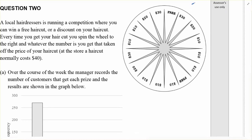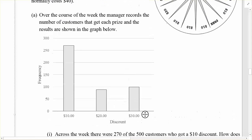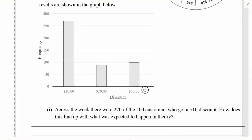We can see here on the wheel that there's a bunch of different prizes, everything from getting the haircut for free down to just a $10 prize. Here's the results from the week, and it says here part one: across the week there were 270 of the 500 customers who got a $10 discount. How does this line up with what was expected to happen in theory?